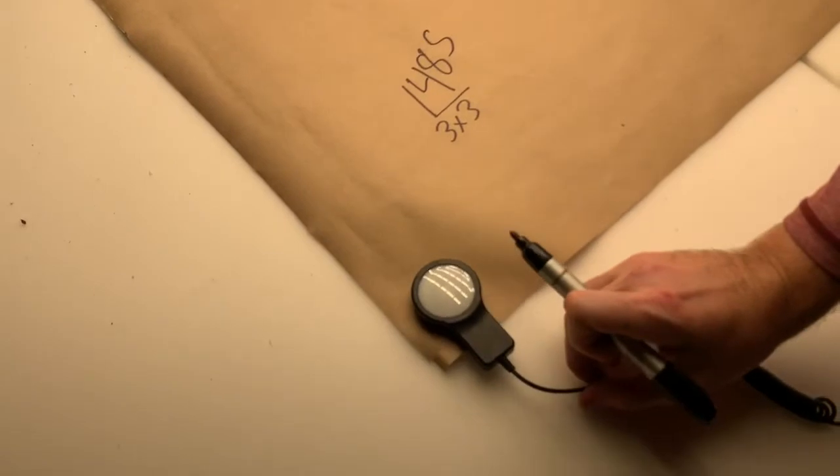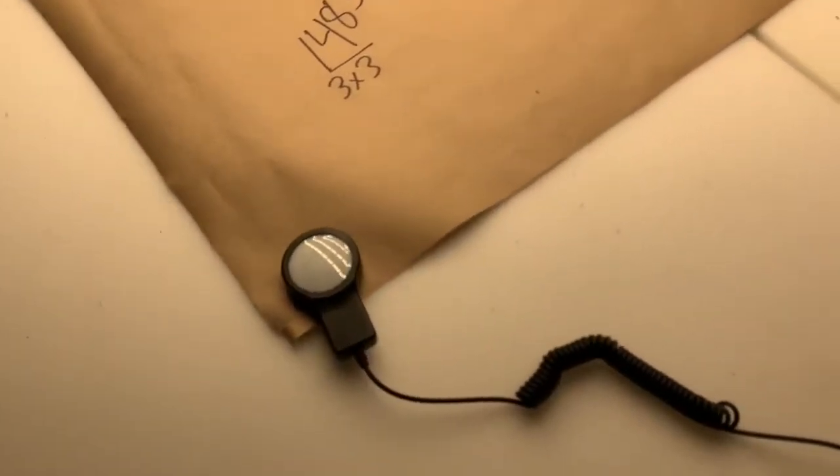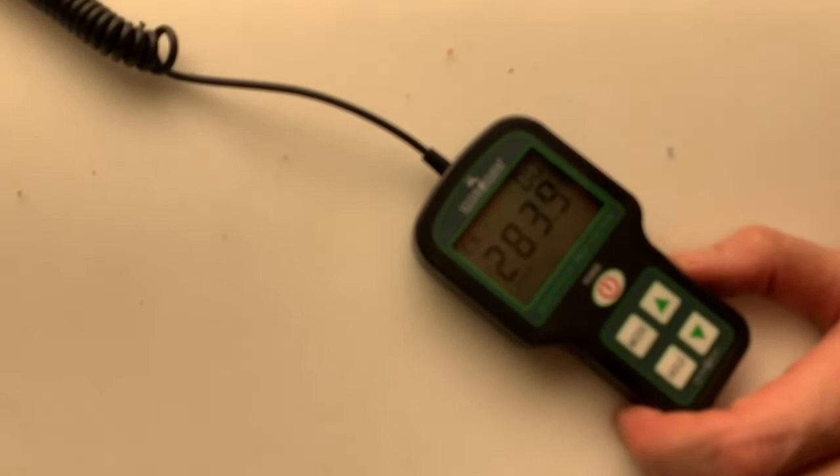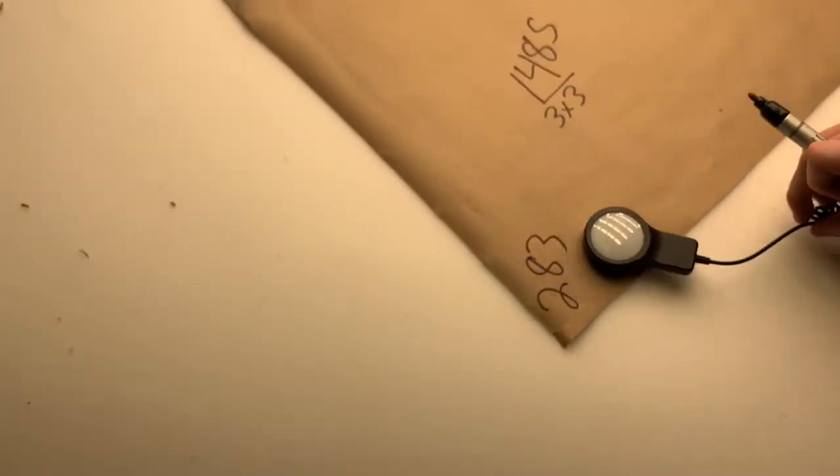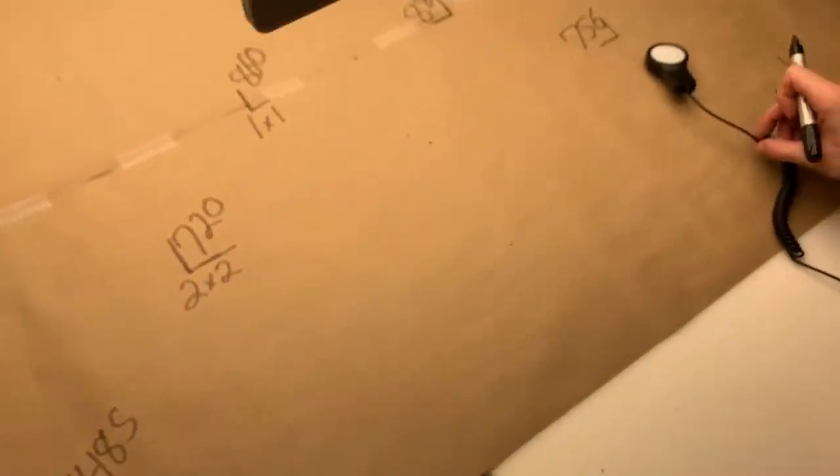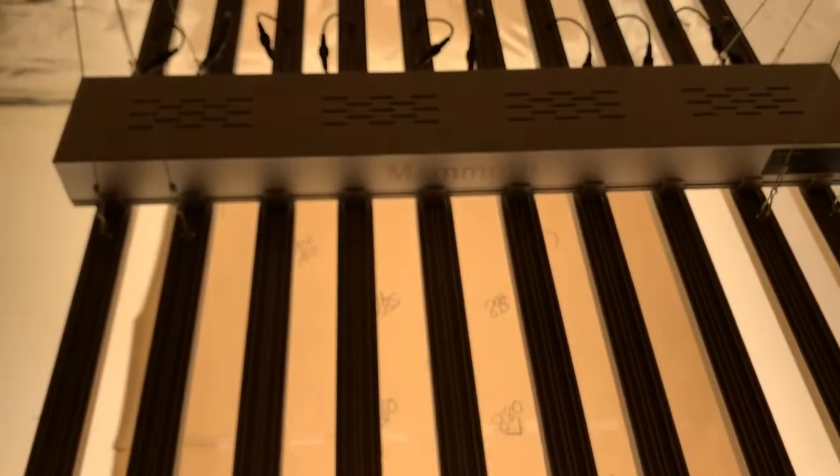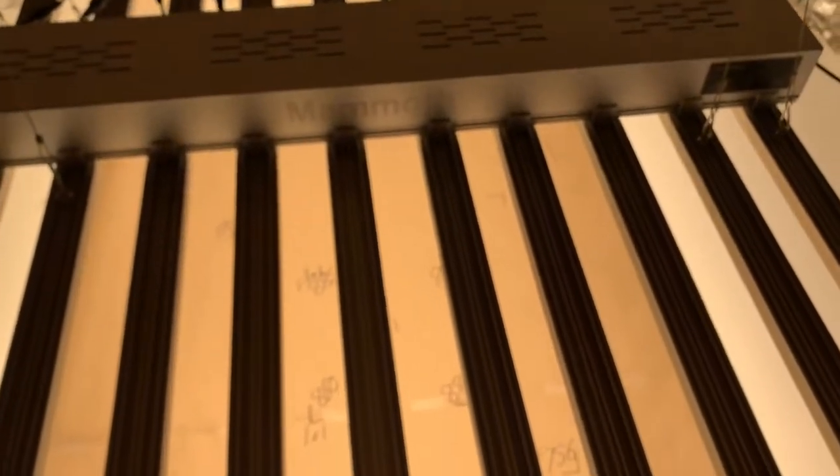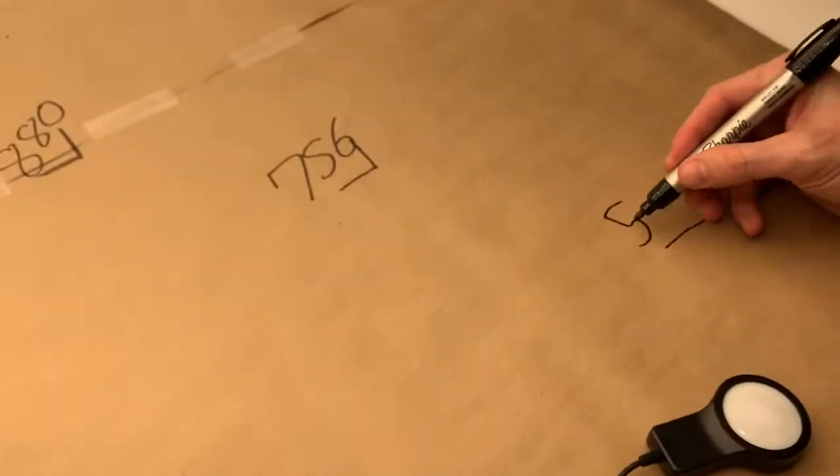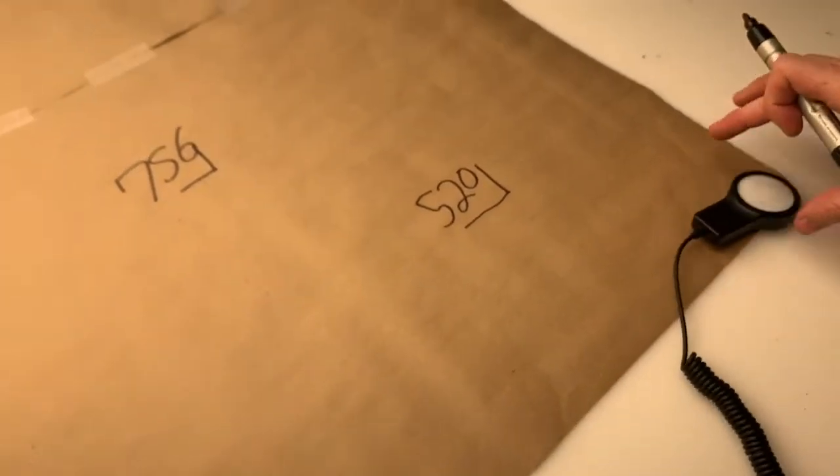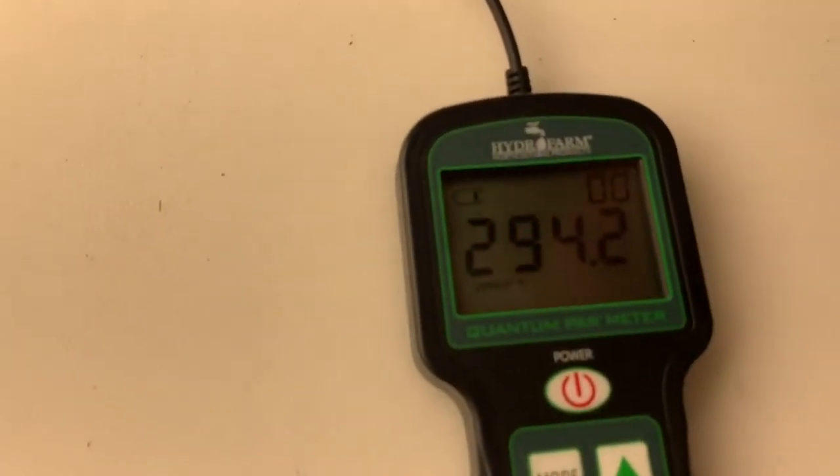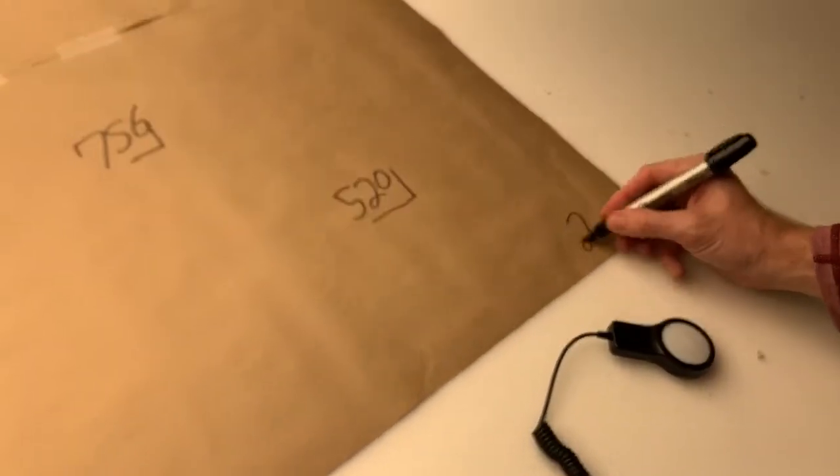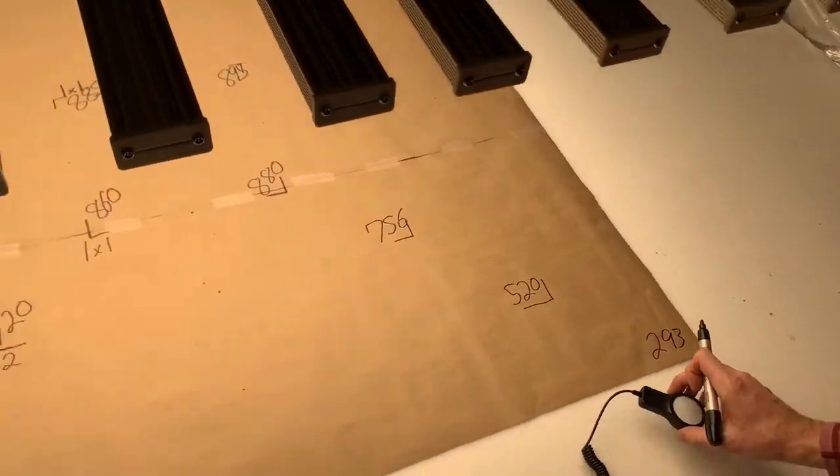Out to 4 feet—283. We'll do the same at three by three here—520. And out to 4 feet, we start to get just outside the bar, we're talking 293. So this is a very good 4x4 footprint.